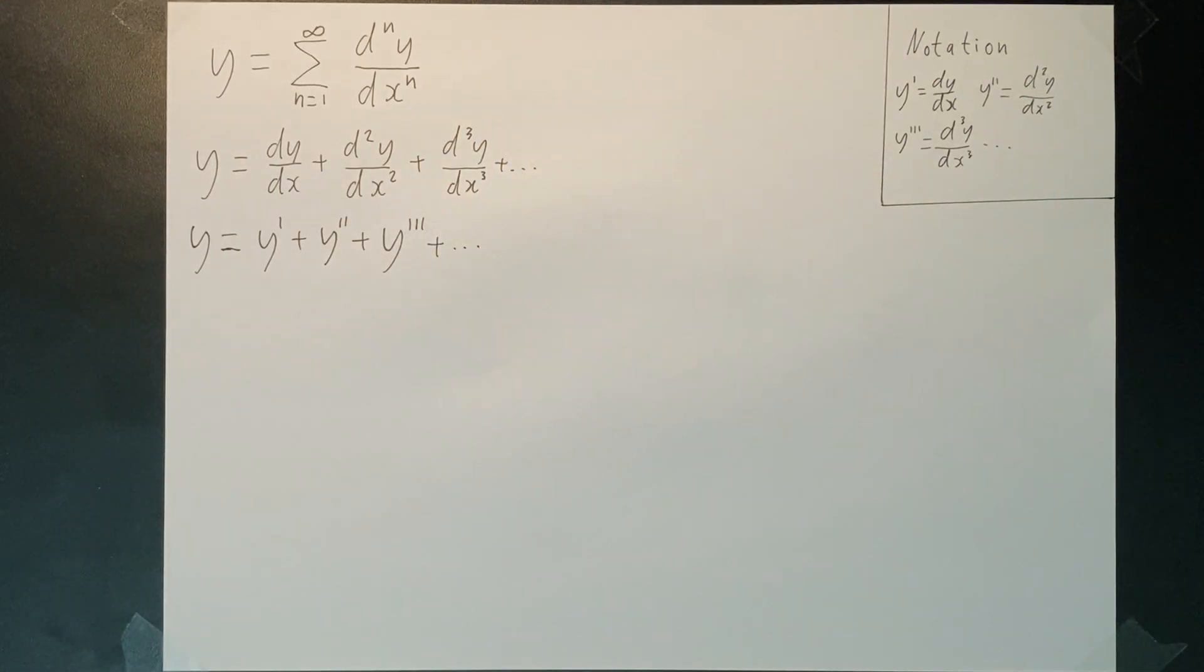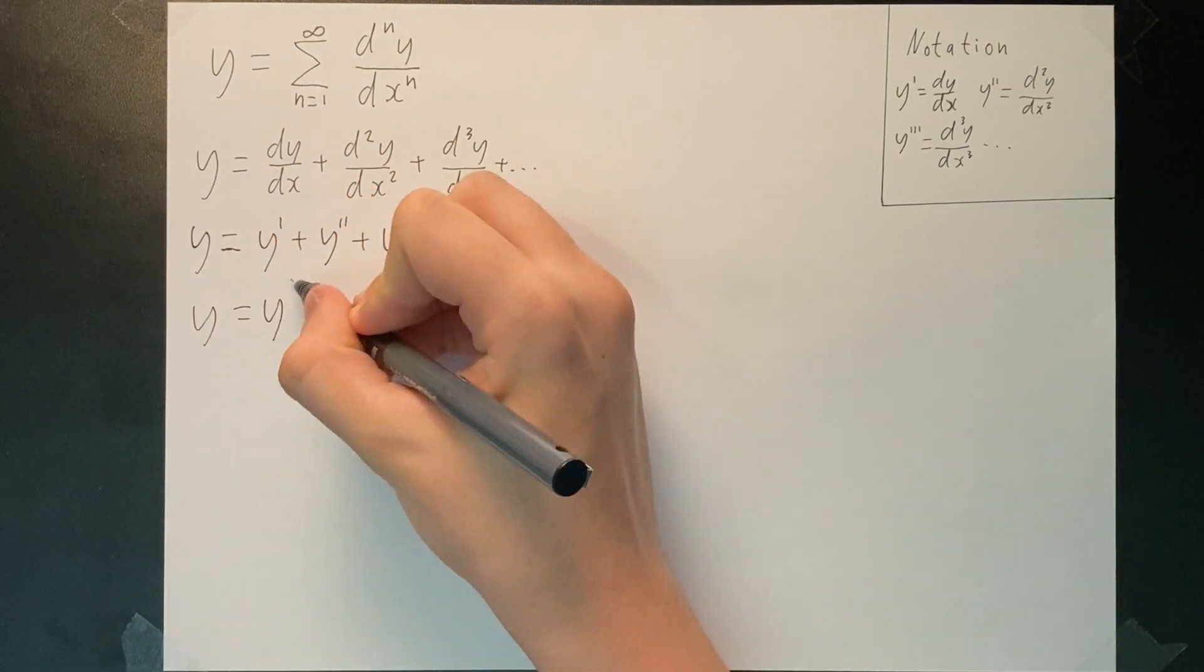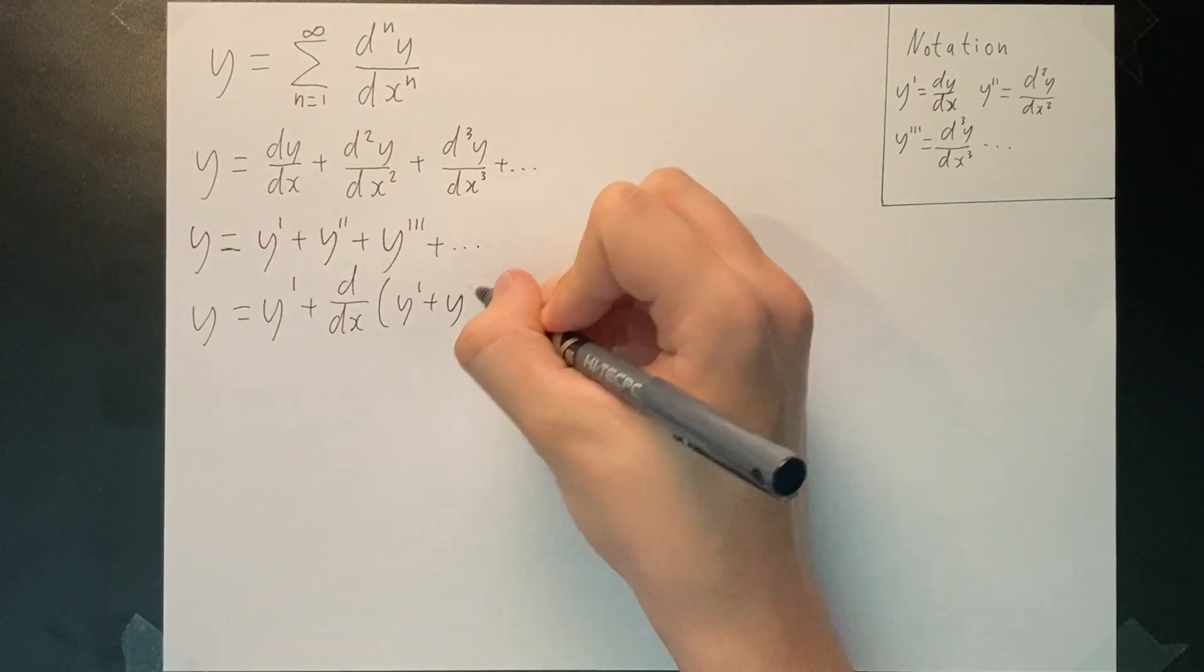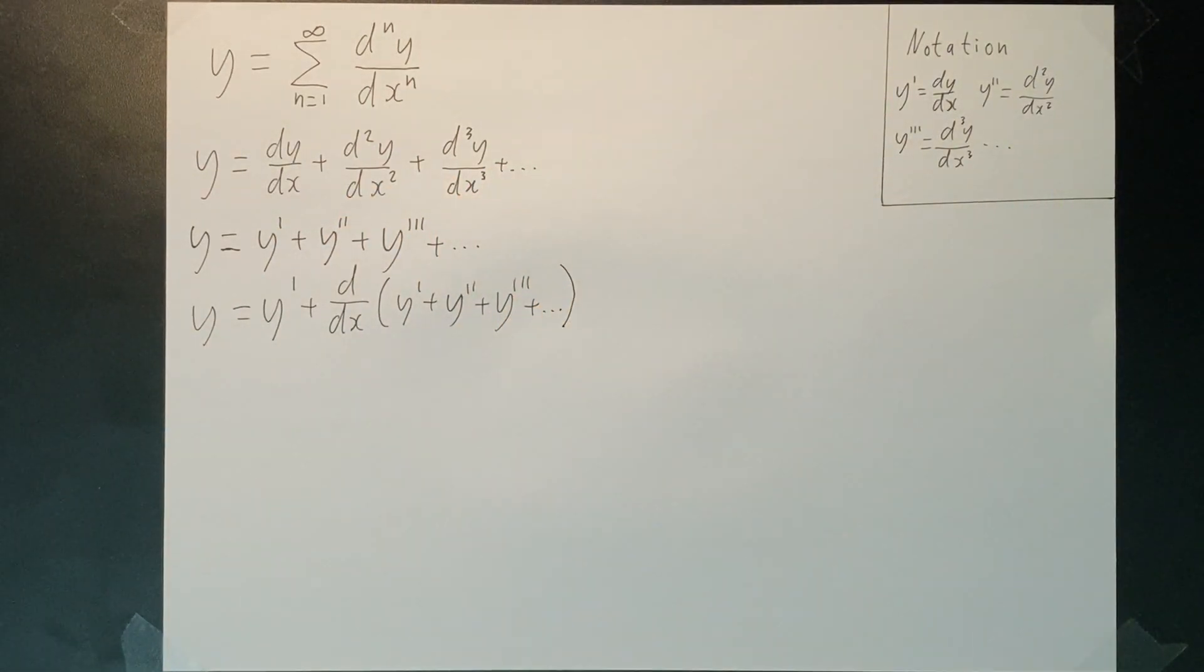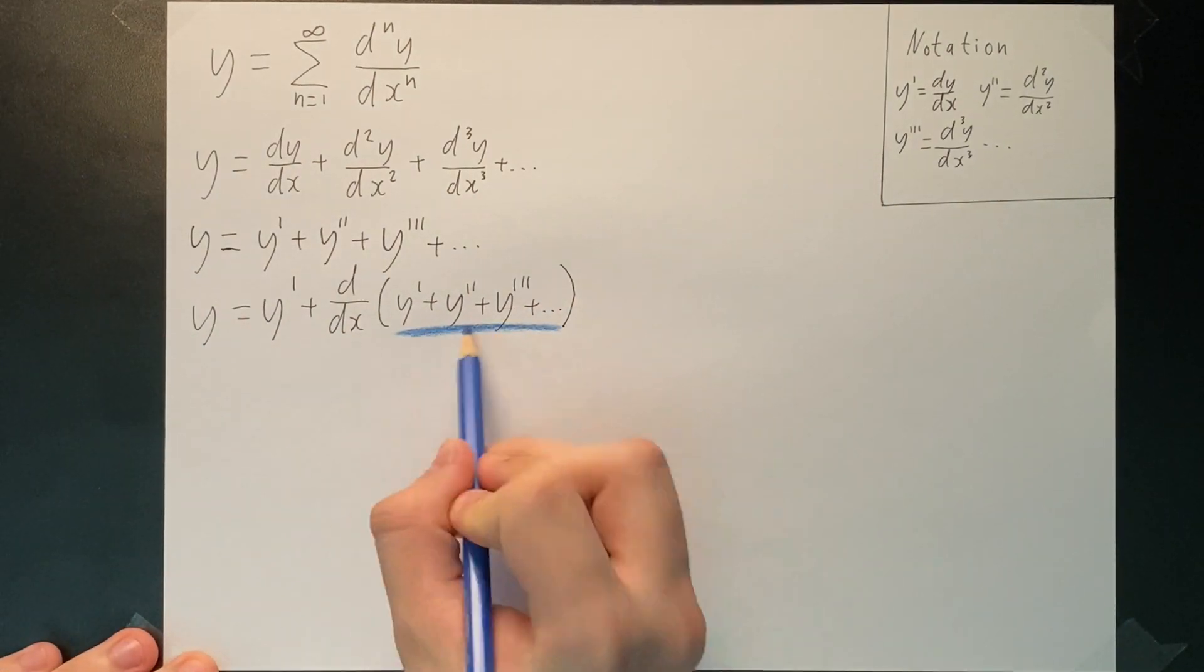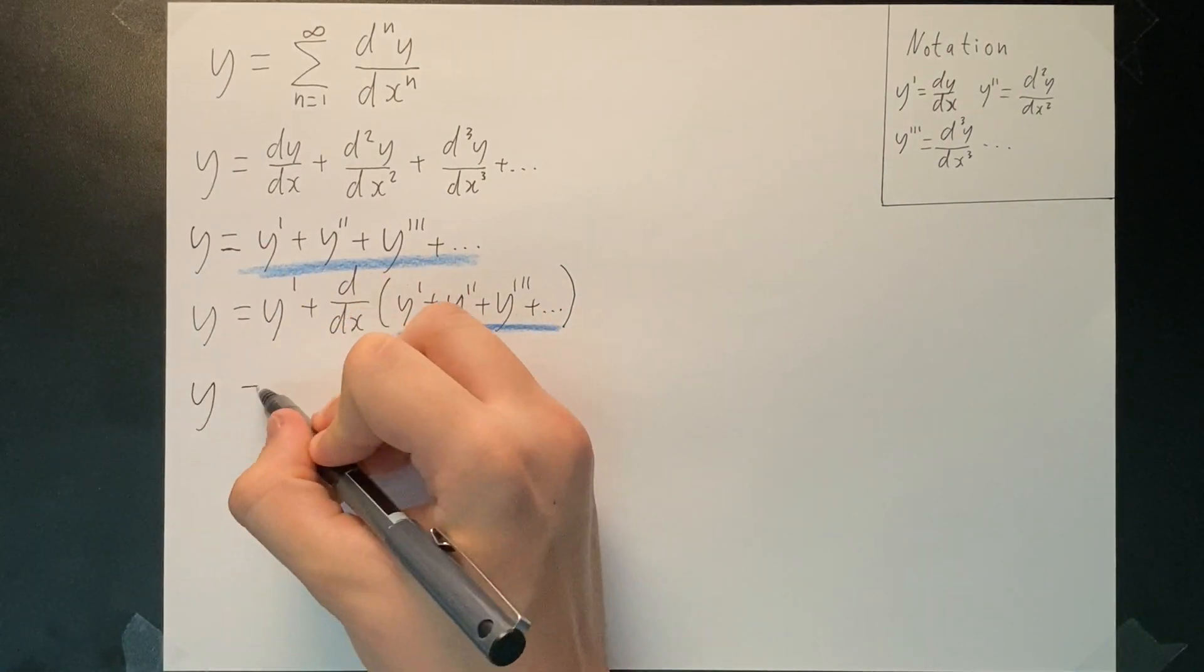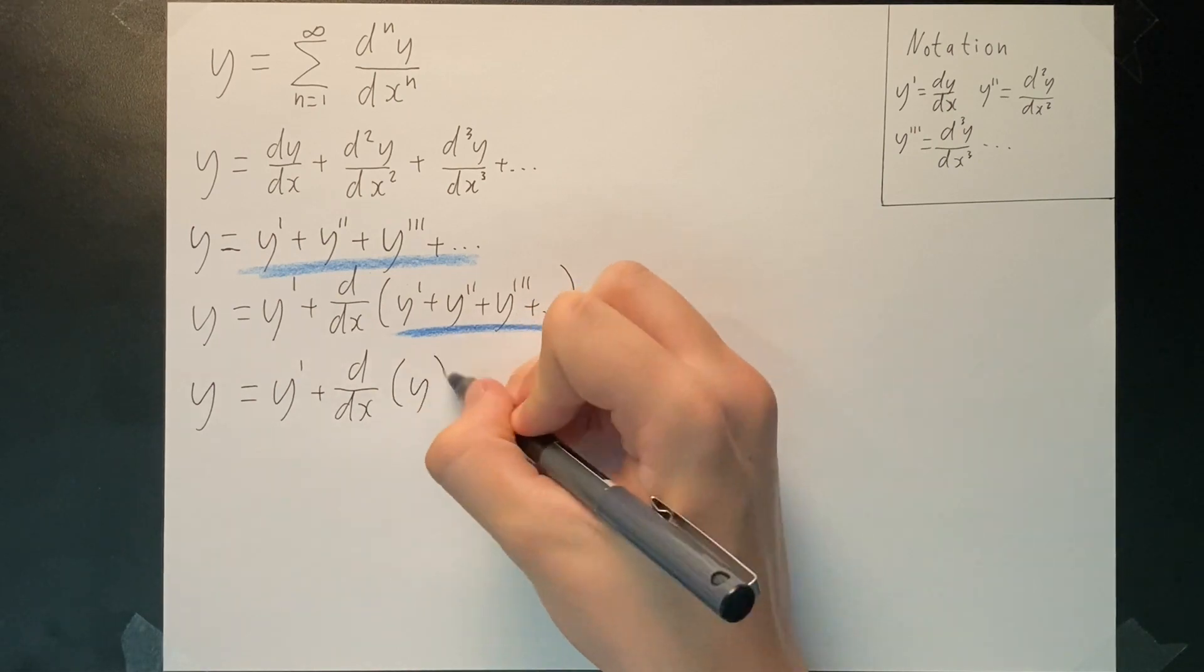The next step is key to solving this equation. From the second derivative onwards, we can factor out a derivative. Realize how the infinite sum inside the brackets is actually just equal to y. We can therefore substitute y.